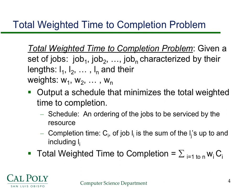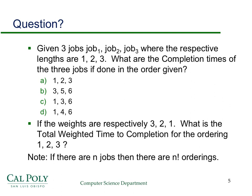The real problem we want to study is sometimes called total weighted time to completion. Now we characterize jobs by both their lengths and their weights, and we want an ordering that minimizes the total weighted time to completion. The completion time C_i is the sum of lengths L_j up to and including L_i, and the total weighted time to completion is the sum of each job's weight W_i times its completion time C_i.